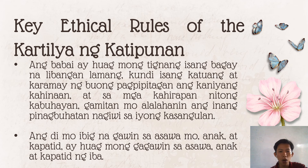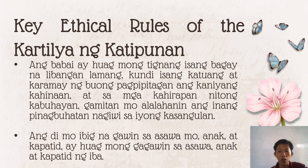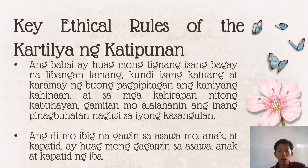The twelfth rule: 'Ang di mo ibig na gawin sa asawa mo, anak at kapatid, ay huwag mong gagawin sa asawa, anak at kapatid ng iba' — 'What you do not desire done unto your wife, children, and siblings, do not do unto the wife, children, and siblings of your neighbor.' Every action has consequences — do not do bad things to others if you do not want bad things done to you. What you sow, you reap.